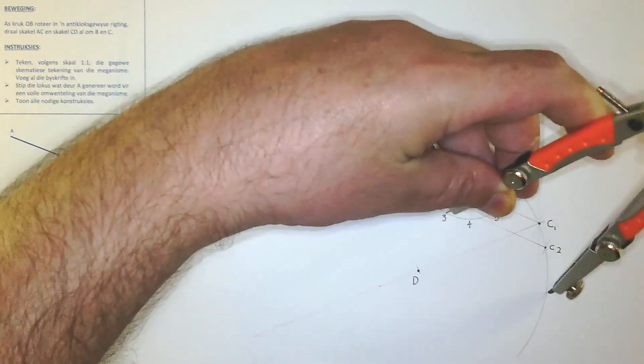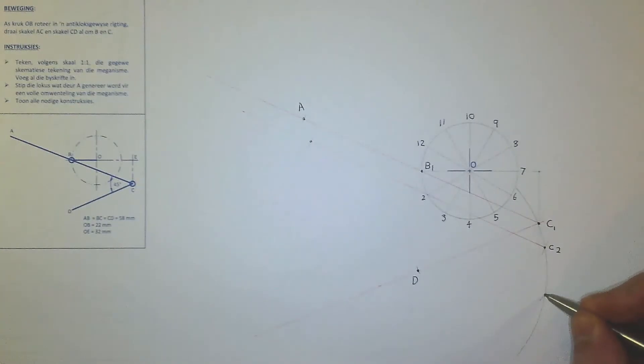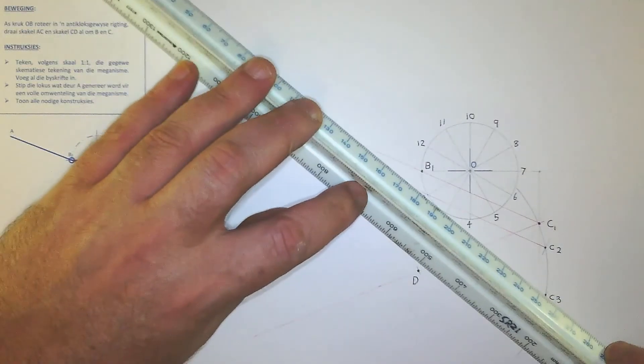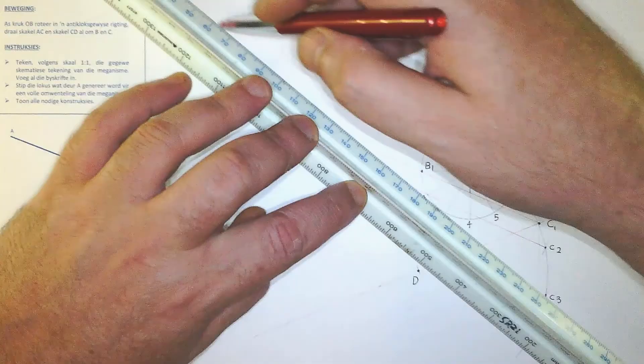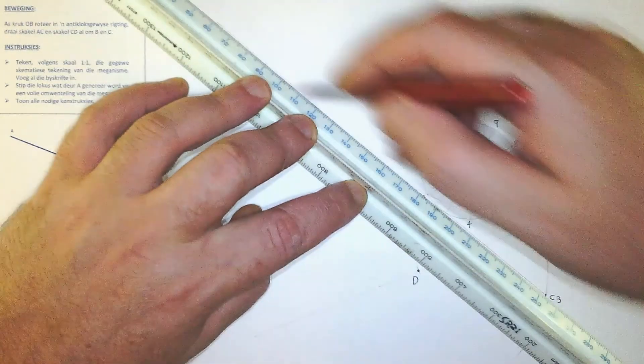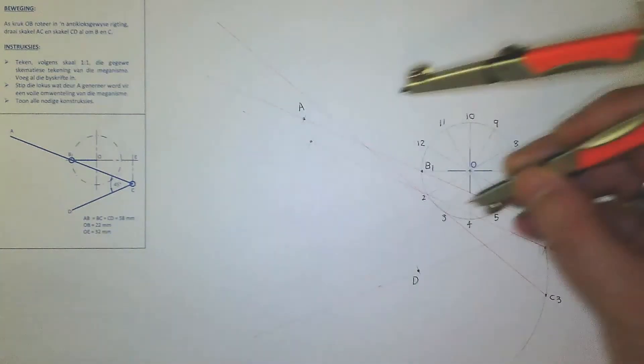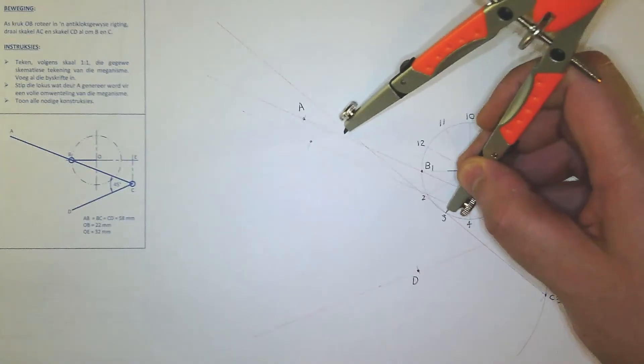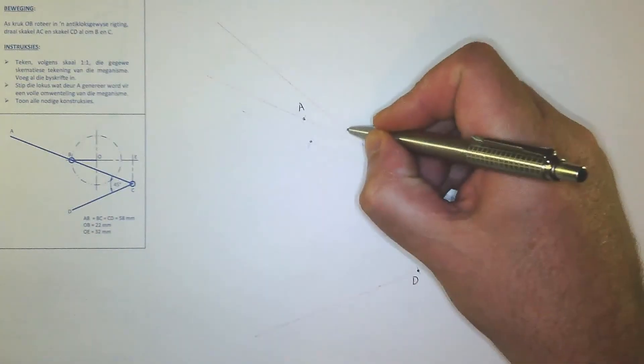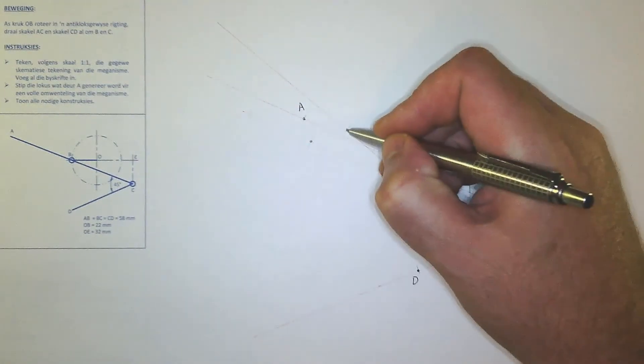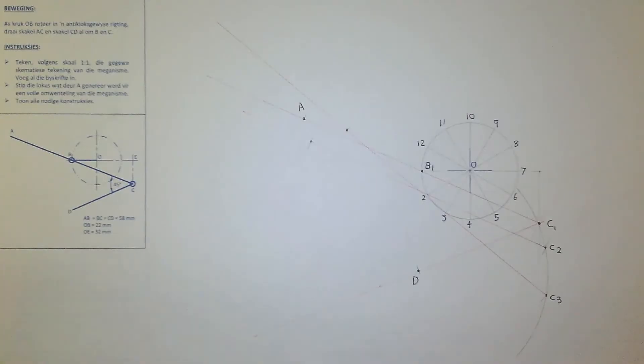So this would be the equivalent of C3, so C3 has to go through B3. You draw the construction line, then you take your 58 again from B3, you mark it on the construction. And there we have the next point, which would be A3, A1, A2, A3. If you rinse and repeat and follow those steps, you will have all the locus points in no time.